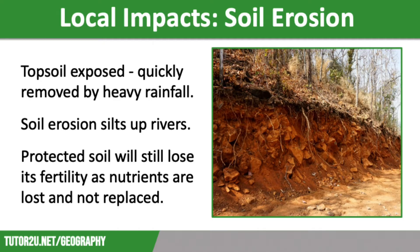Even if the soil is protected it quickly loses the fertility it had when it was covered by trees. Even more nutrients are removed when land is used for grazing or for crop plantations. So farmers have to abandon the patch of land they have been working on to move to pastures new, which leads to further forest clearance and soil degradation.